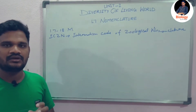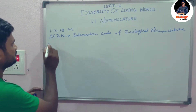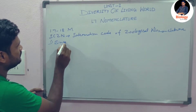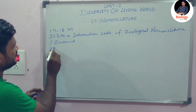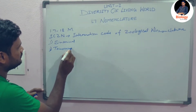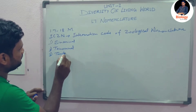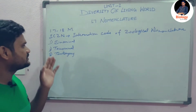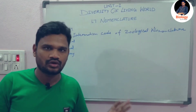Now let's see how many types of nomenclatures there are. We have three main types: the first one is binomial nomenclature, the second is trinomial nomenclature, and the third one is tautonymy. These three are the procedures used to name an organism.